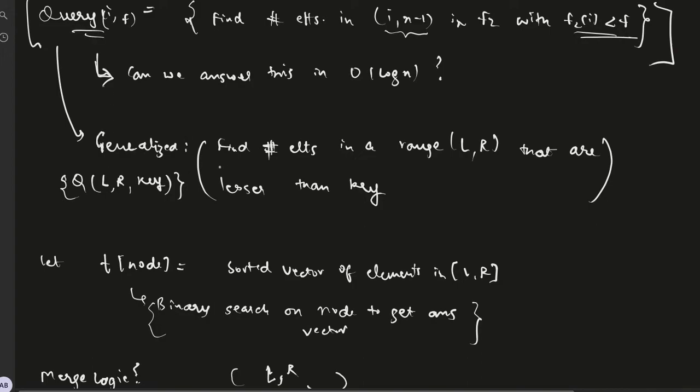In general, if we have a query of this form - find number of elements in the range l to r that are less than a certain key - then this might be a hint to use merge sort tree. Because if we do binary search on the vector, we'll be able to answer this query.